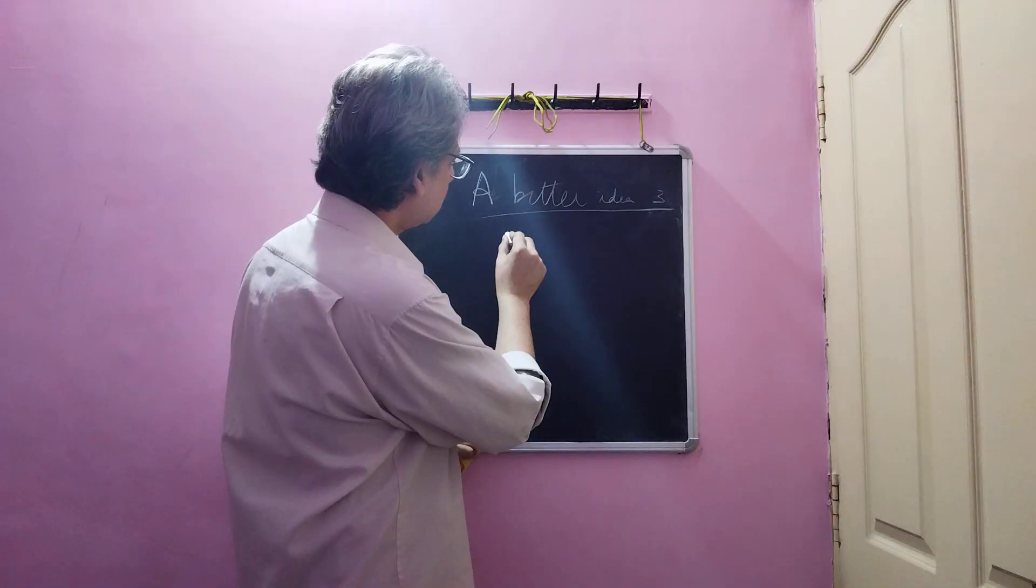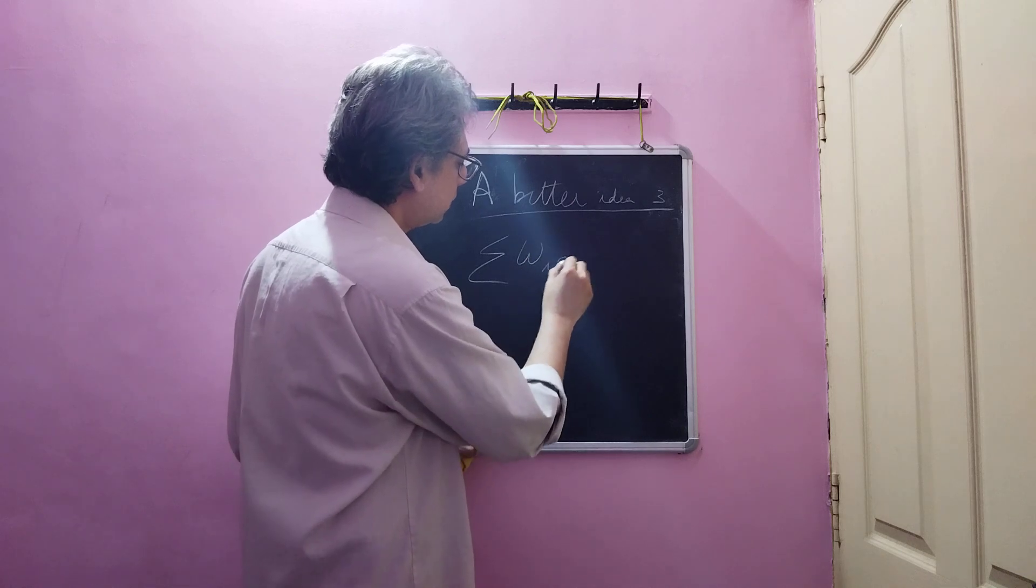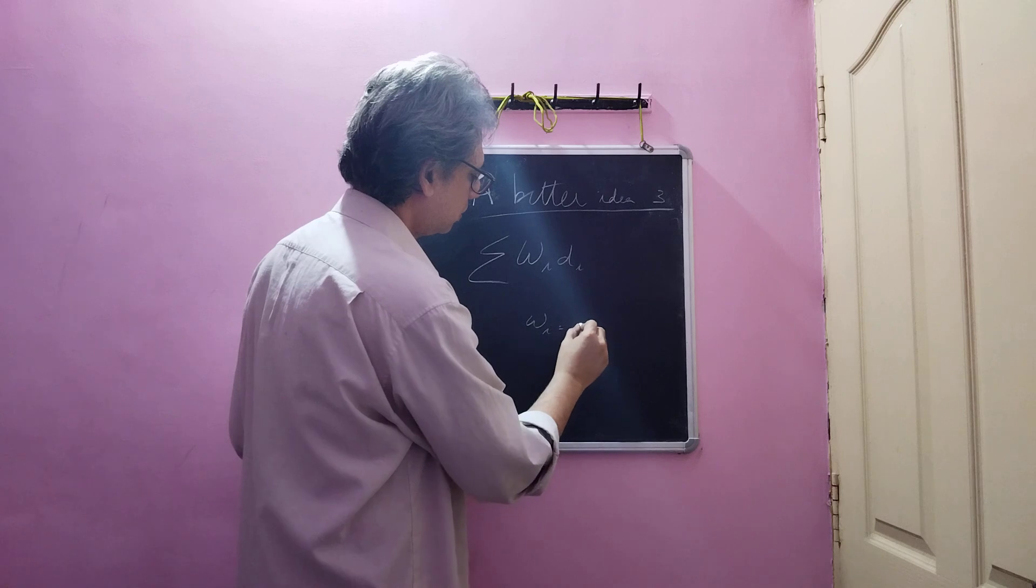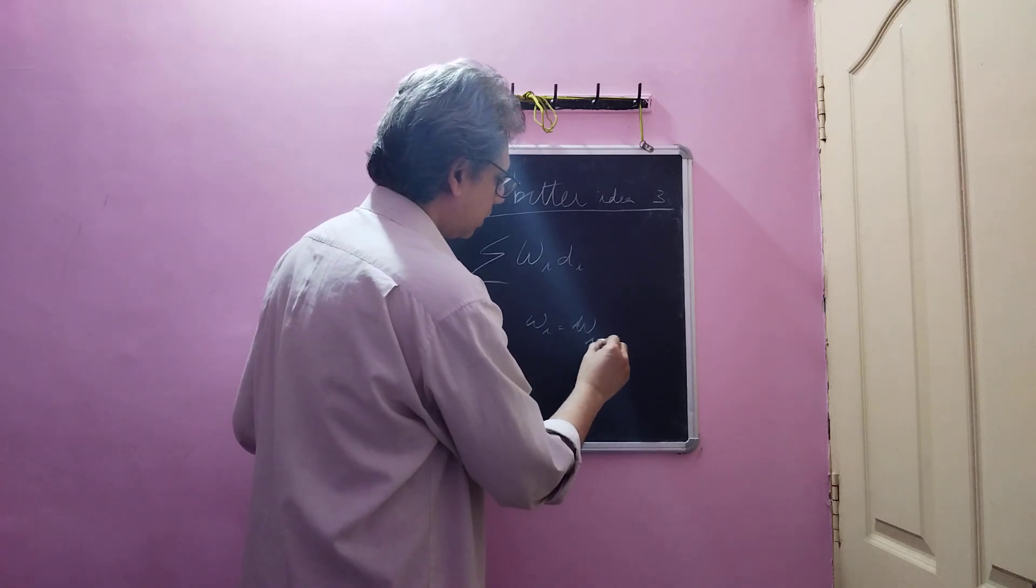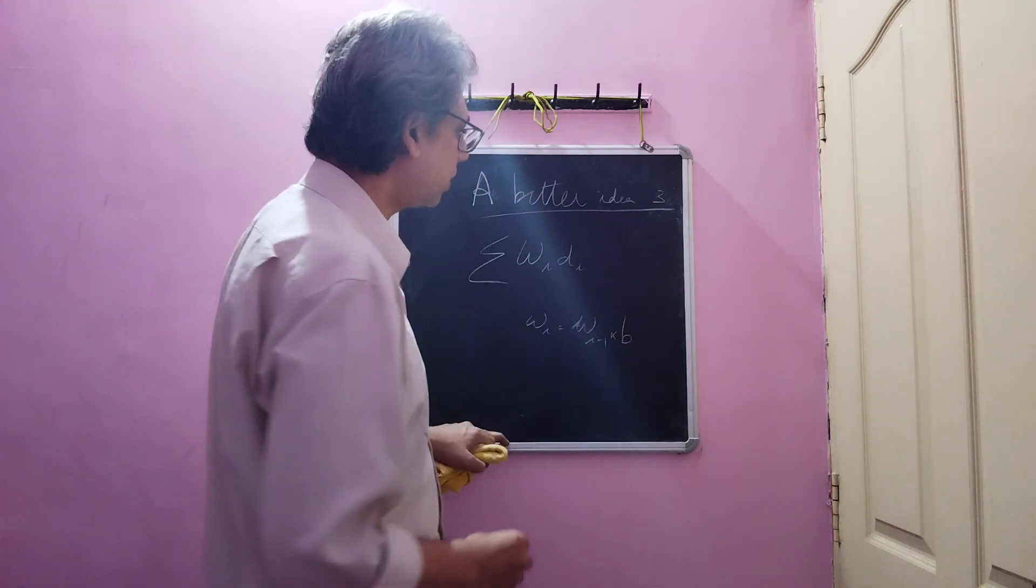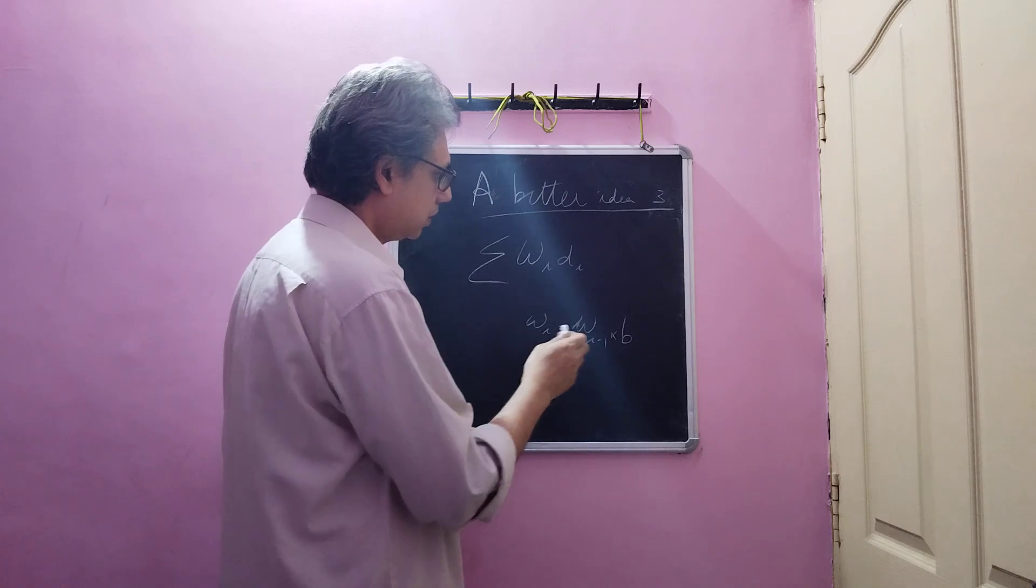We know that the definition of a number is summation wi di, where wi is equal to wi minus 1 times b, where b is the base of numeration and weights are just multiple powers of b.